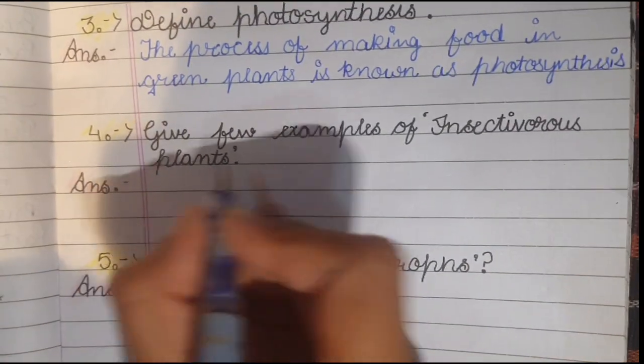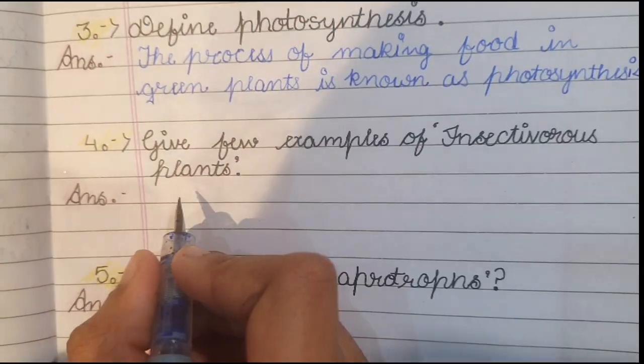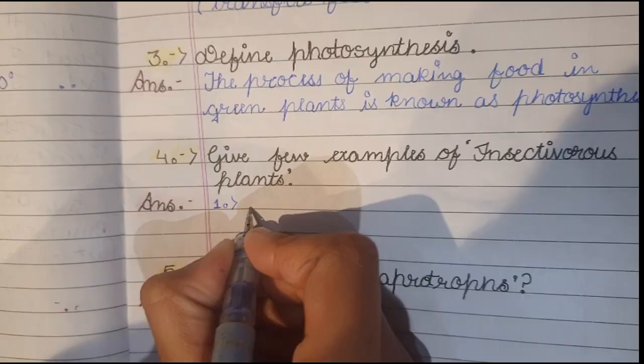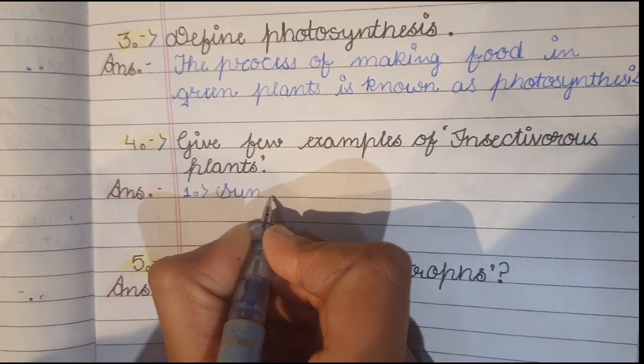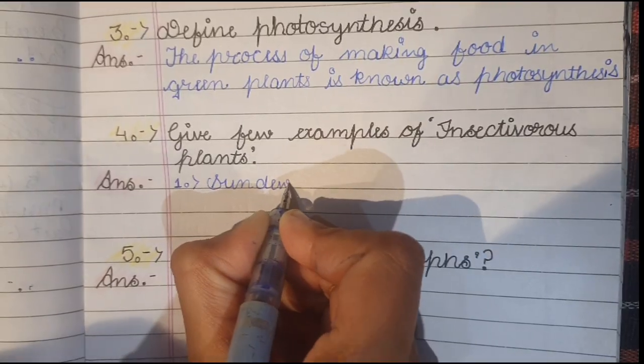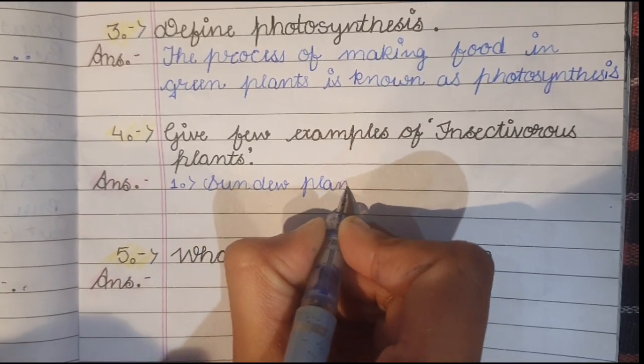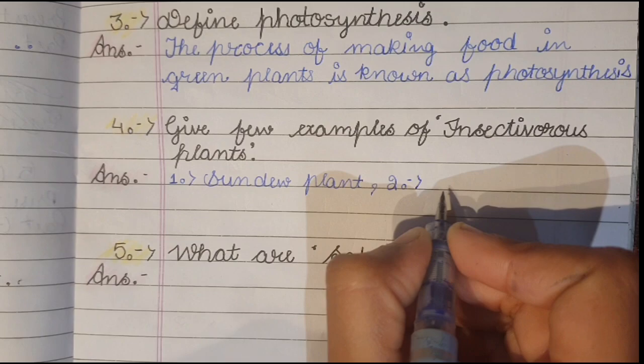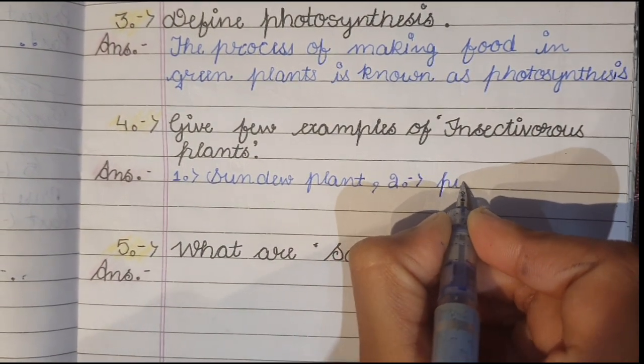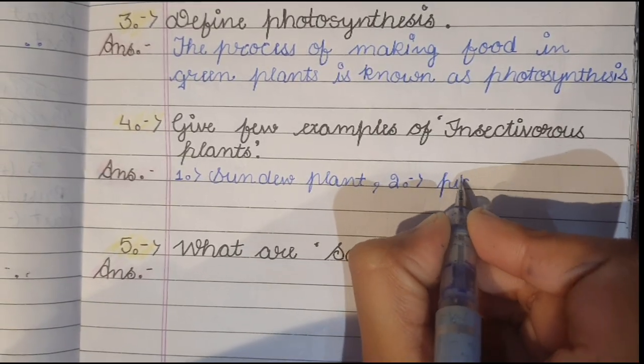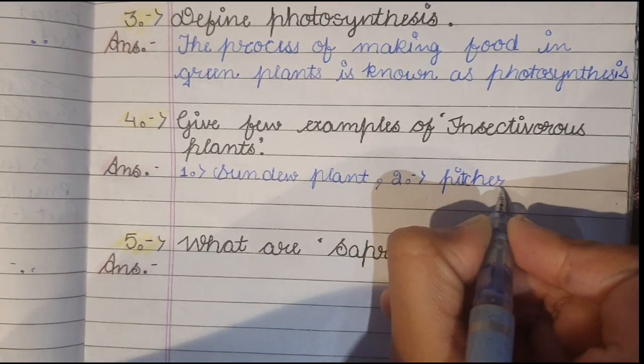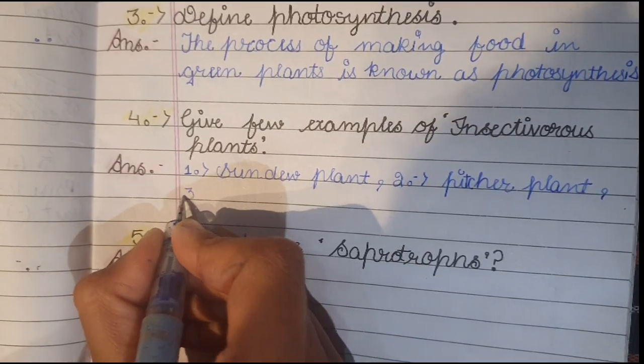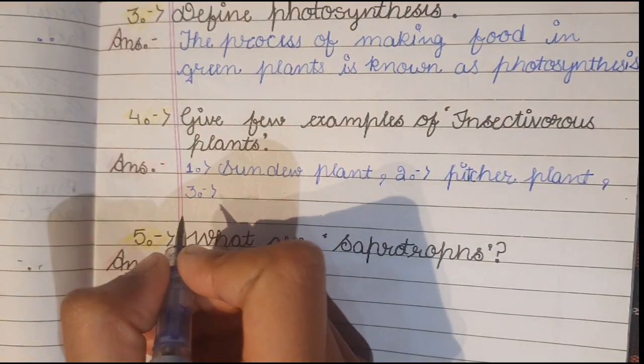Fourth one is give few examples of insectivorous plants. Its answer is: 1. sun dew plant, 2. pitcher plant, 3. bladderwort plant.